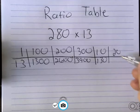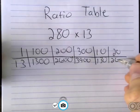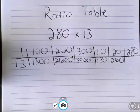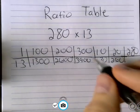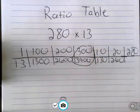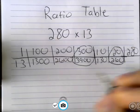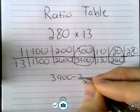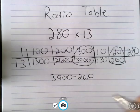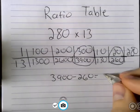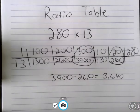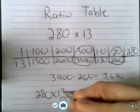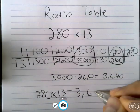And then to find our final answer of 280, I would just have to subtract our answer of 300 times 13 minus 20 times 13, so basically I would just have to solve 3900 minus 260, which is going to be 3640. So in the end, 280 times 13 is equal to 3640.